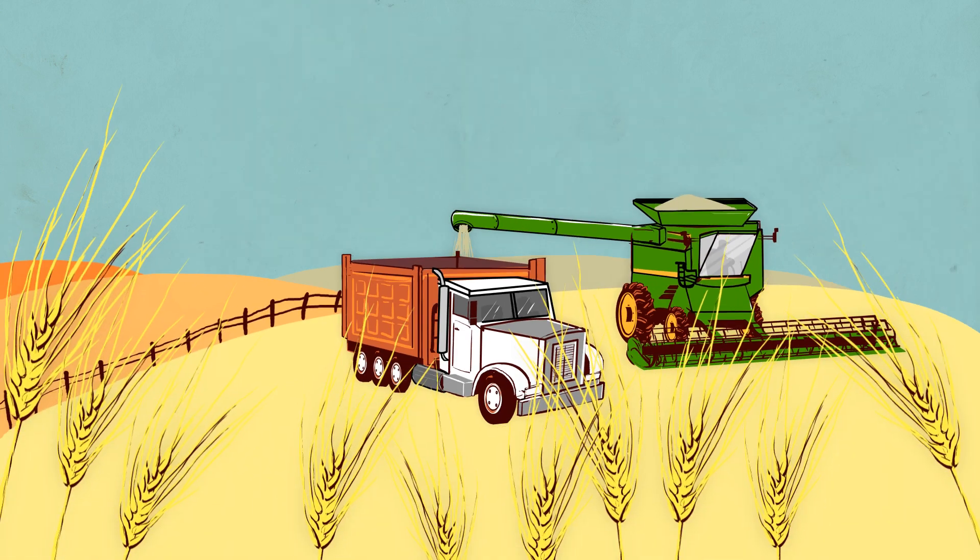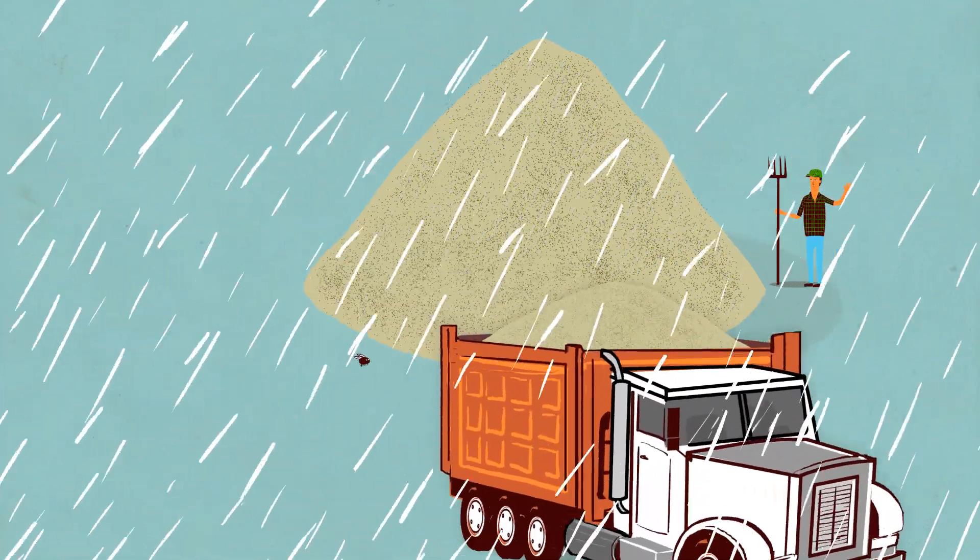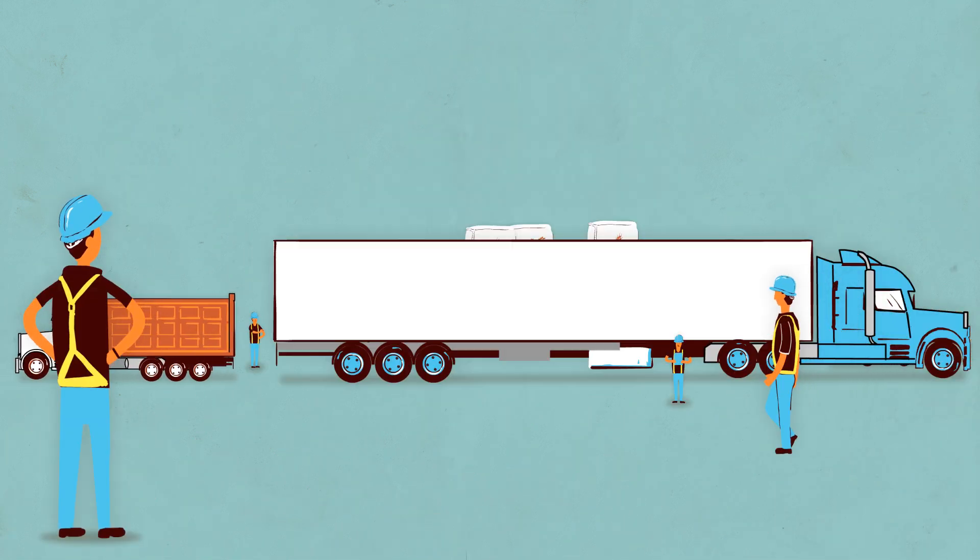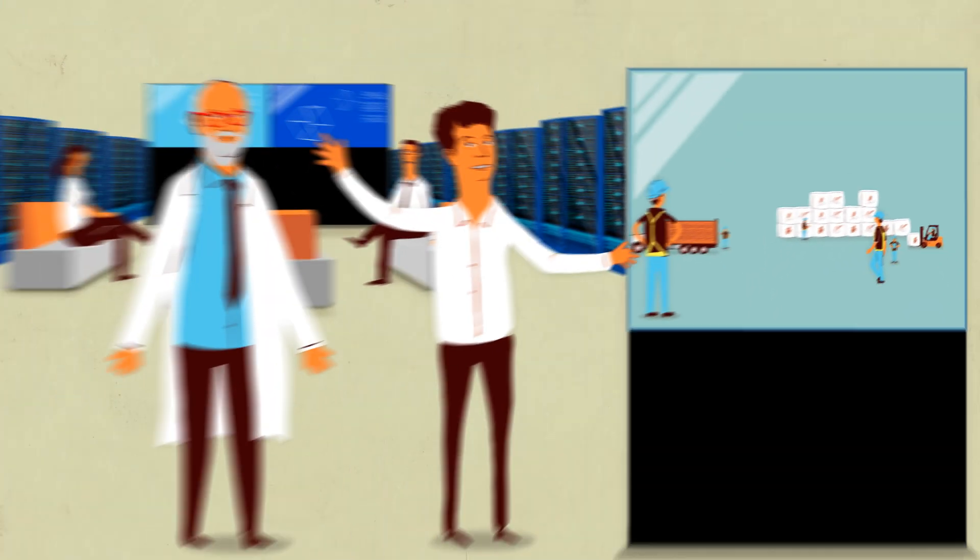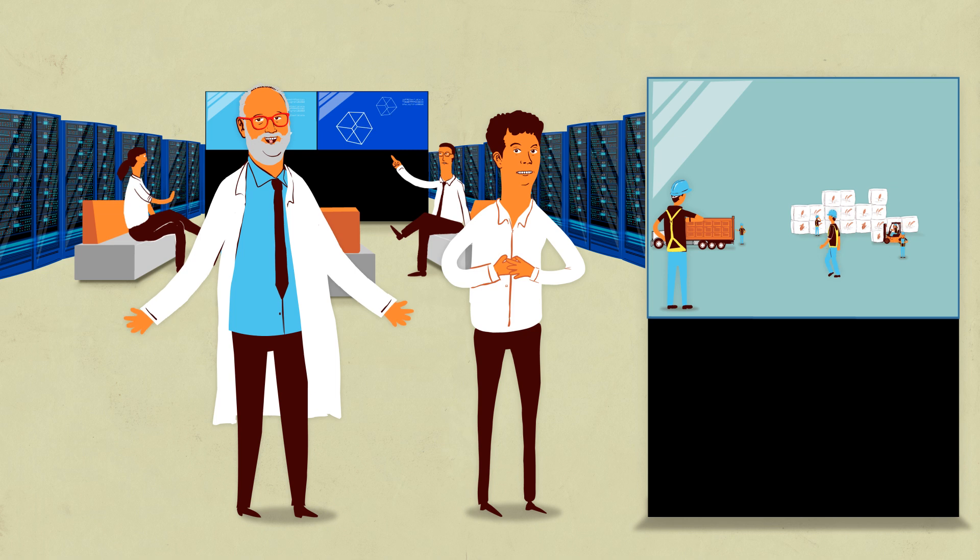And not only that, this tells us things that we never could have seen before, like where the food was grown, how it was transported, and maybe even what happened en route. Our approach to food safety just got a lot smarter.